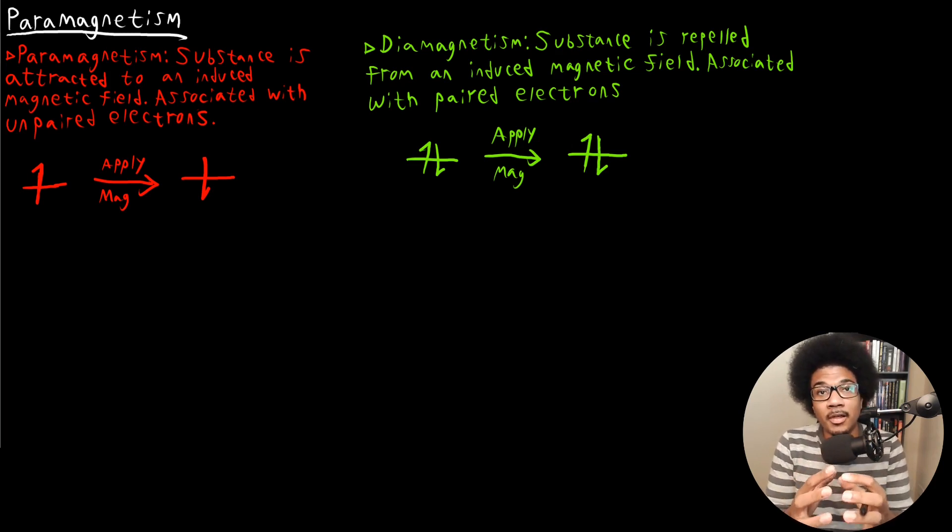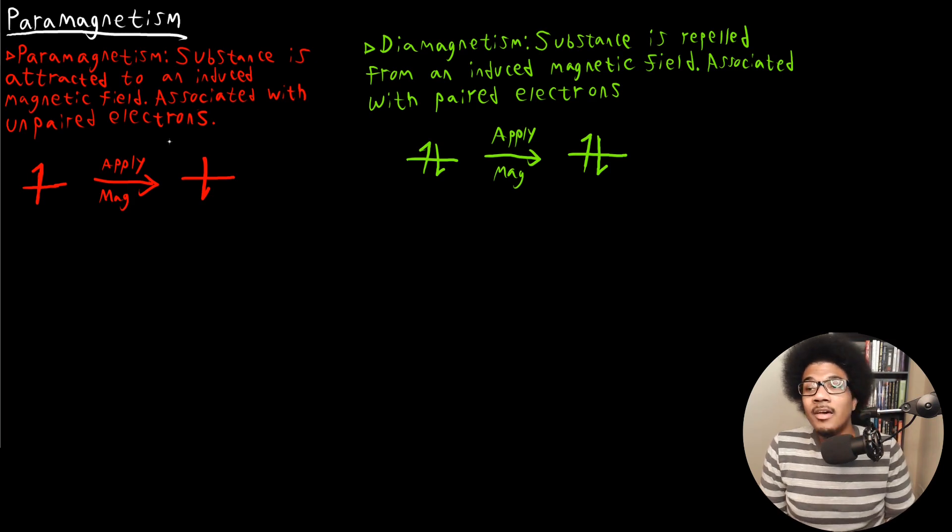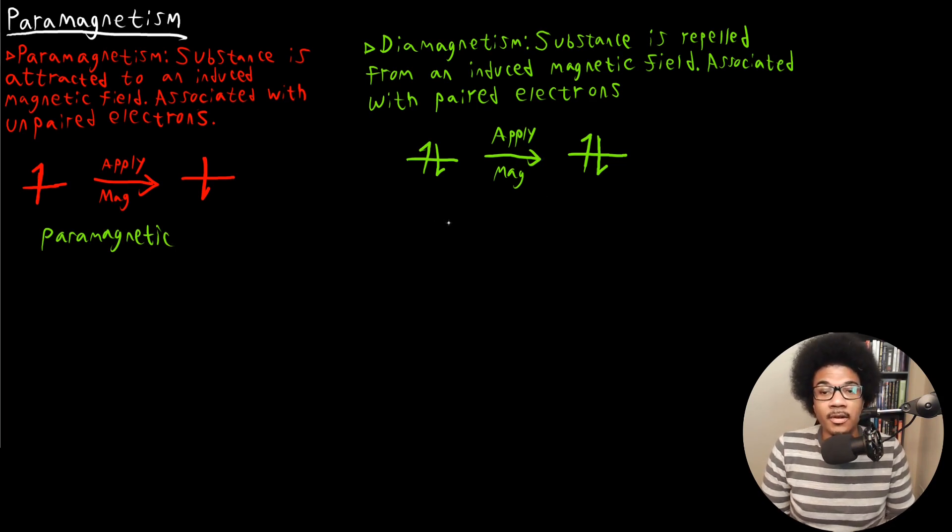That energy of those electrons being paired will overcome the energy of the applied magnetic field, whereas a free electron has no such interaction. So if it's an unpaired electron that's present in a substance, then it will be attracted to an induced magnetic field. We would say that it is paramagnetic versus if we have all paired electrons and no unpaired electrons, then this is going to be diamagnetic.